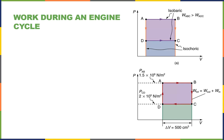Net work equals the positive area under the expansion stroke, plus zero for the vertical isochoric lines, minus the area under the contraction stroke. Adding these, the net work is the area enclosed inside the cycle shape. For that problem, the cycle wasn't a parallelogram, so you had to be careful calculating the enclosed area.